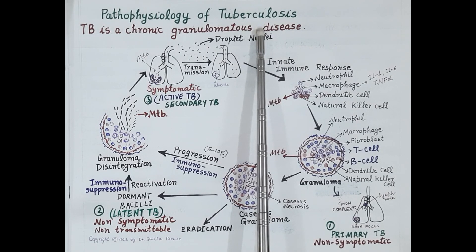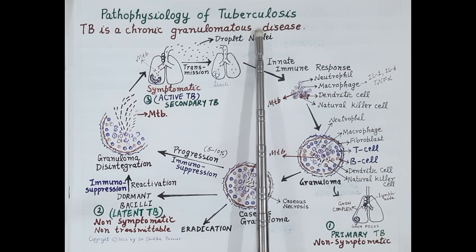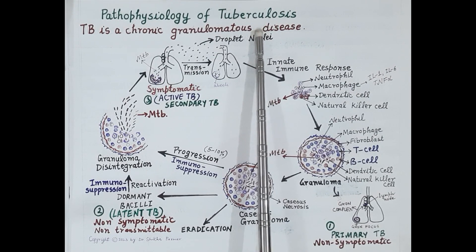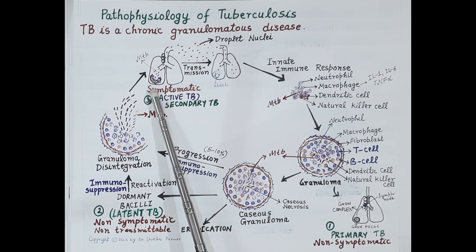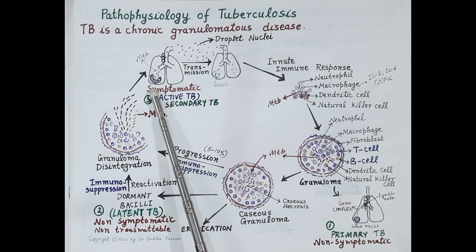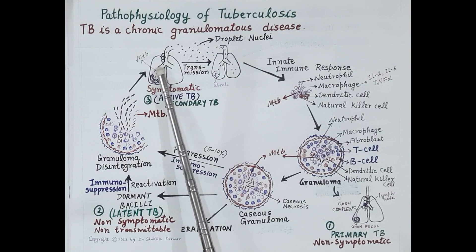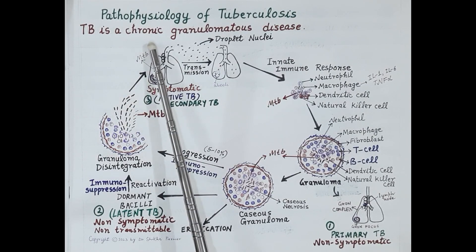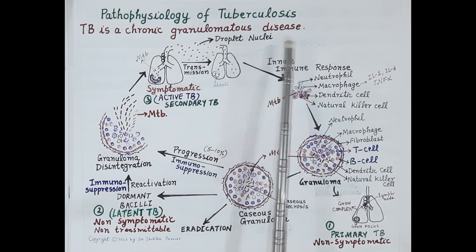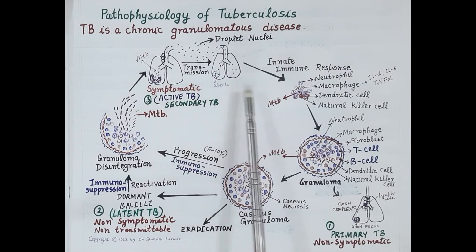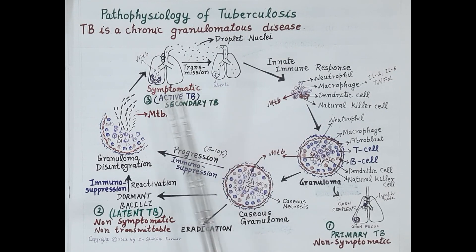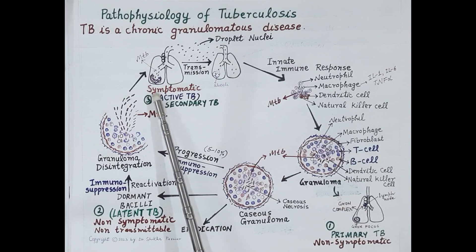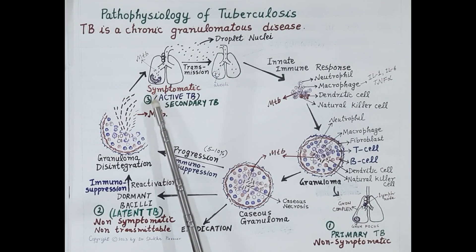Now let's discuss the pathophysiology of pulmonary tuberculosis. Tuberculosis is a long-lasting, often progressive disease that may get worse over time if not treated adequately. The characteristic lesions or wounds of tuberculosis formed in the lungs are termed as granulomas, and thus TB is defined as a chronic granulomatous disease.